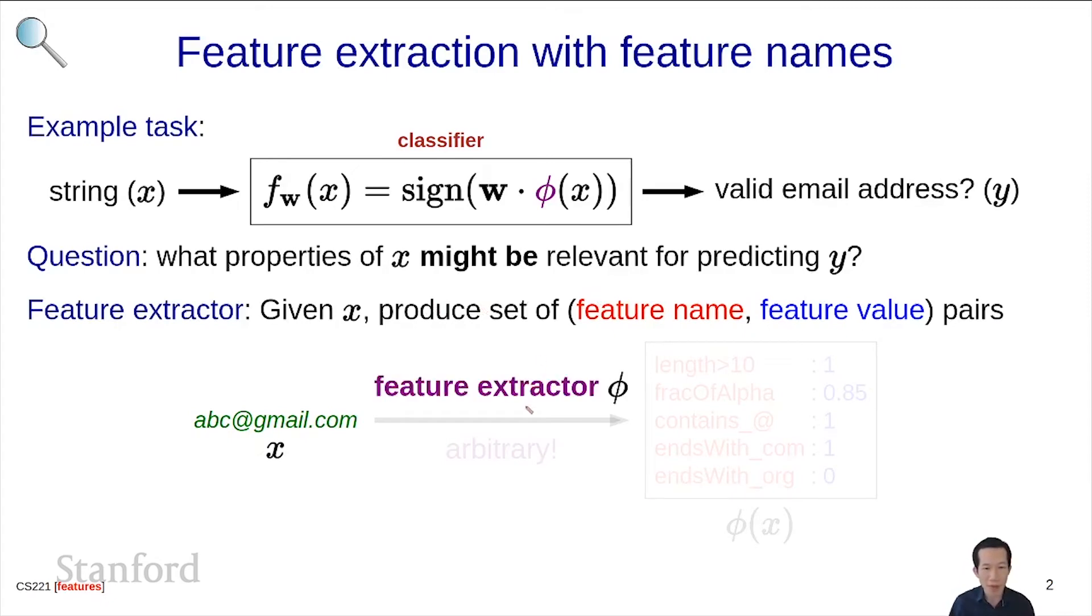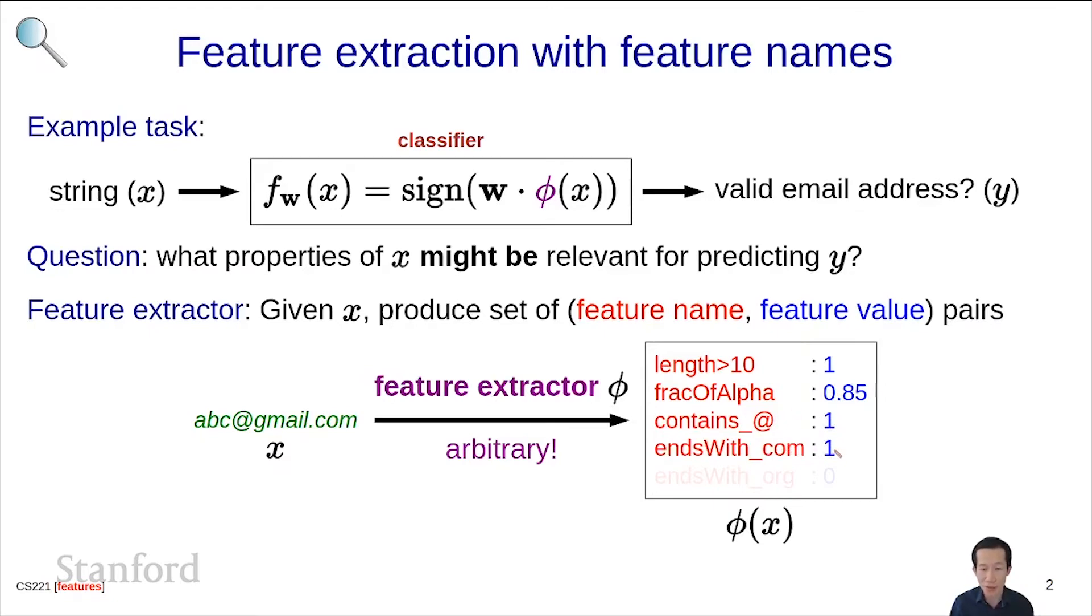In this particular example, the feature extractor is going to produce a feature vector. In this case, we might look at the length. Is it greater than 10? In this case it's 1, because length has something to do with whether it's a valid email address. The fraction of alphanumeric characters, 0.85 in this case. Does it contain an at sign? That's 1 because it does contain an at sign. Ends with com, it's 1 here. And does it end with .org, it's 0 here. So this is a feature vector that we might construct for this particular application.